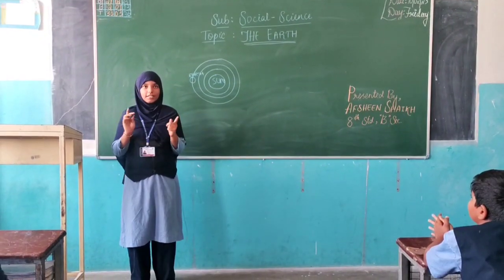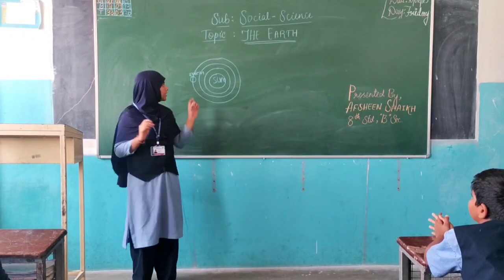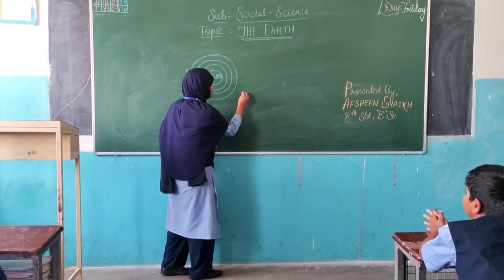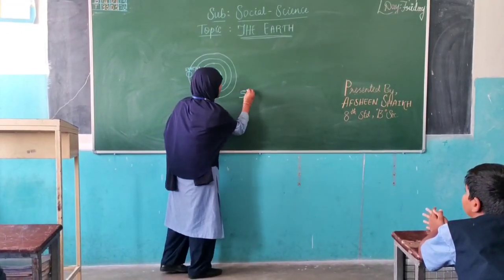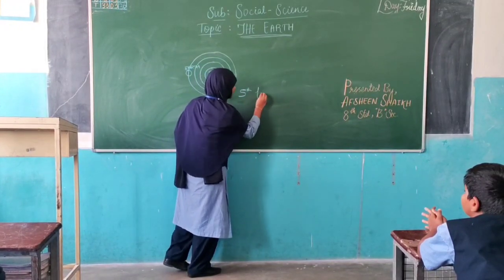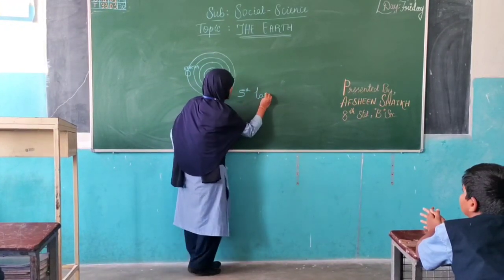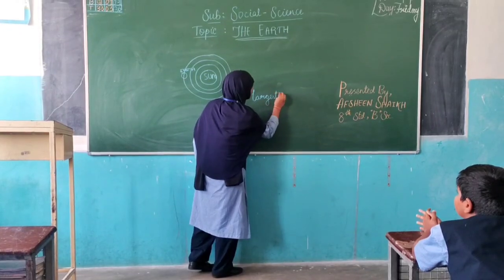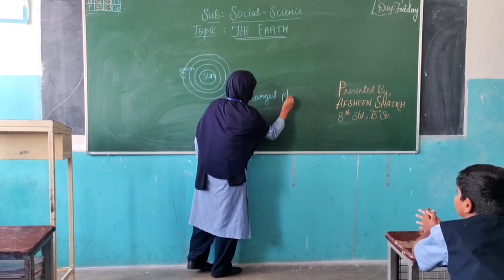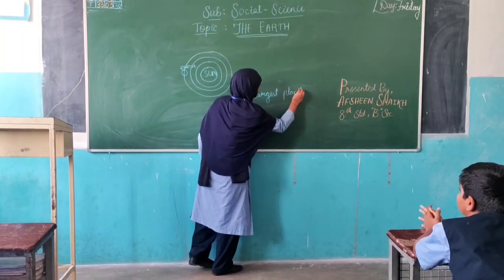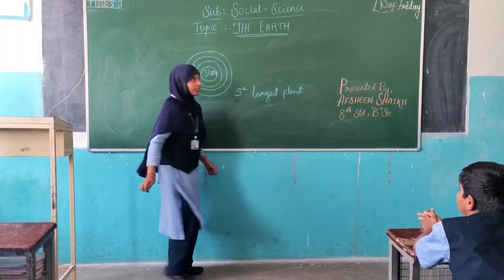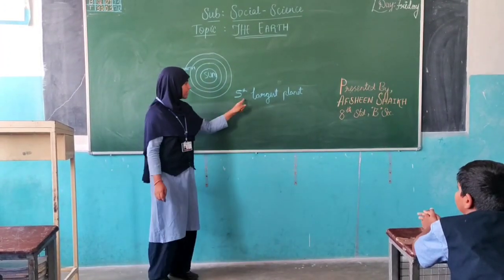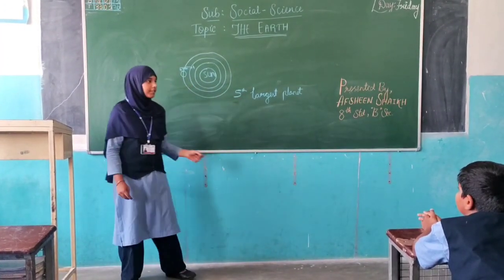You all know the Earth is the third planet, but you may not know that the Earth is the fifth largest planet. Everybody knows that Jupiter is the first, but the Earth comes under the fifth largest planet.